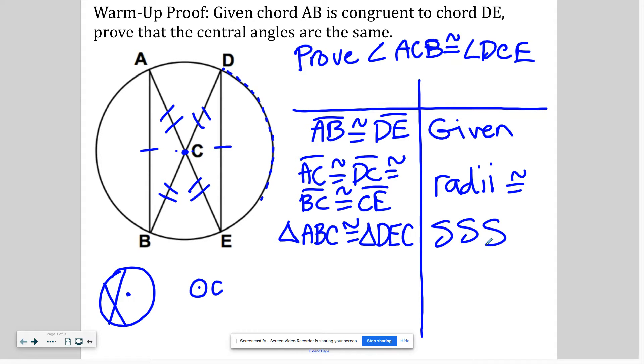So they're congruent. So if they're congruent, that means all their parts have to be congruent. And I know what I'm trying to prove. ACB has to be congruent to DCE, sorry.